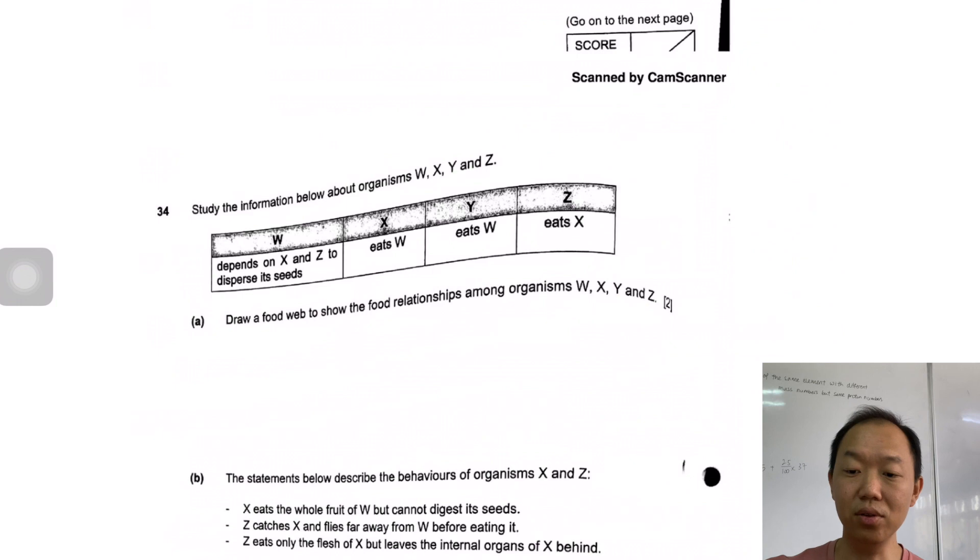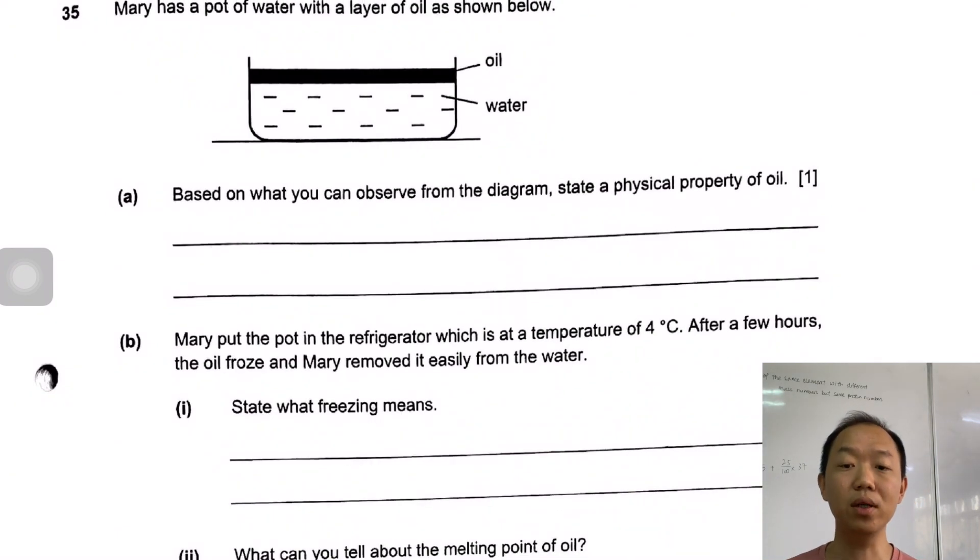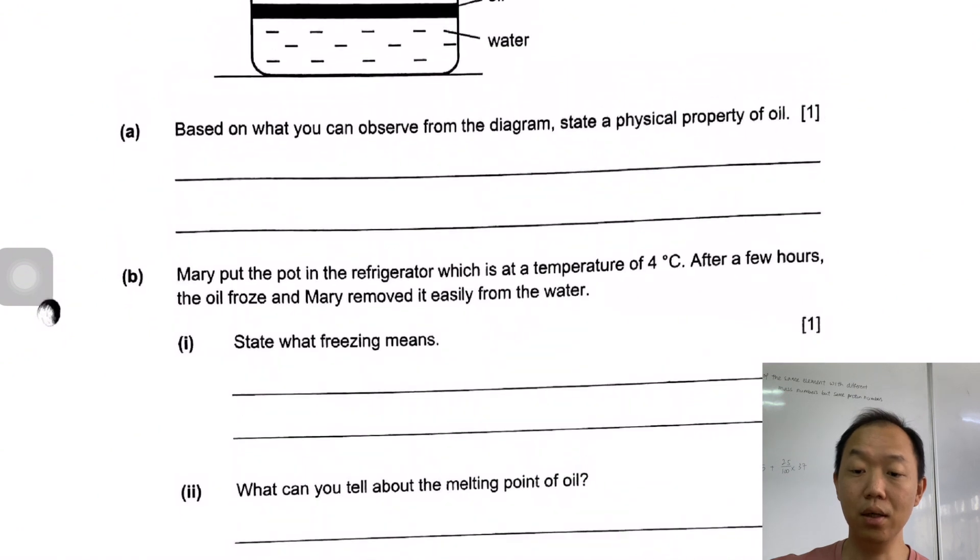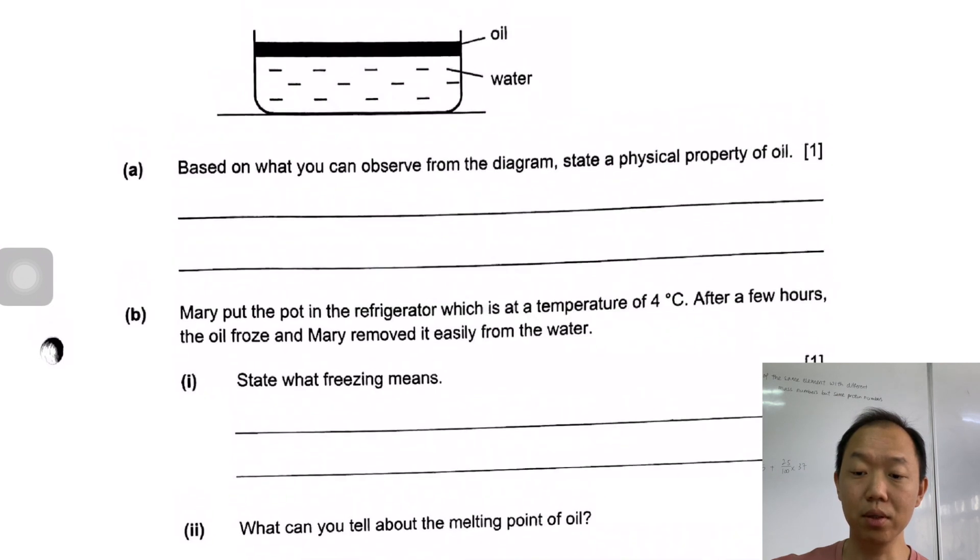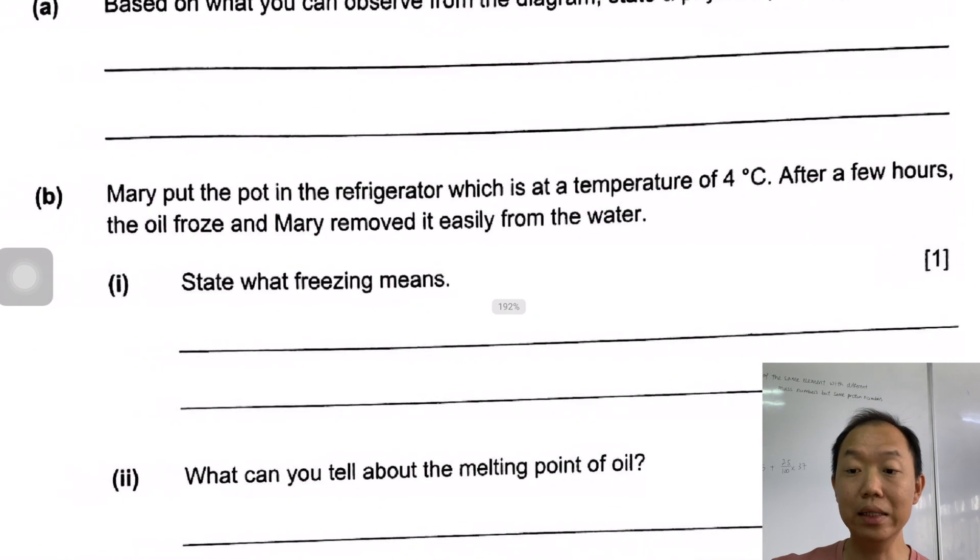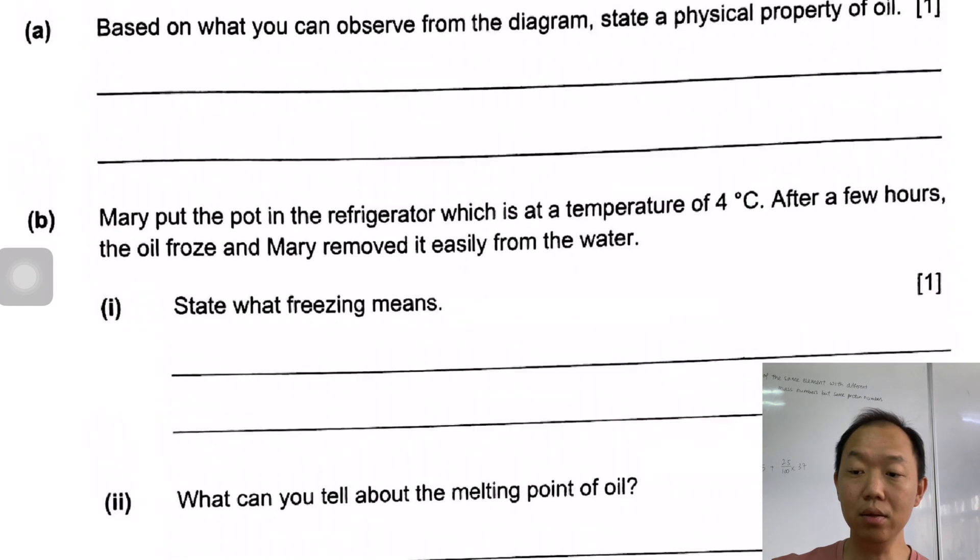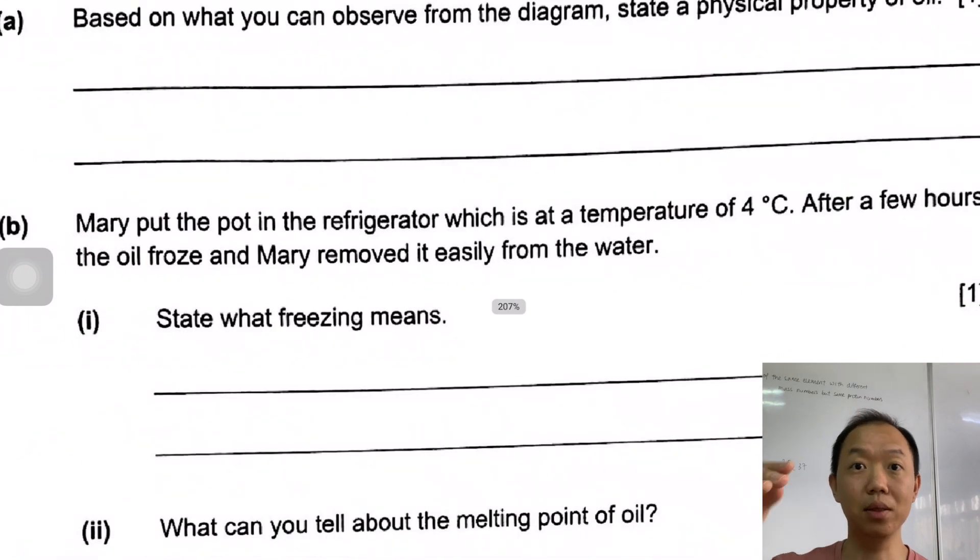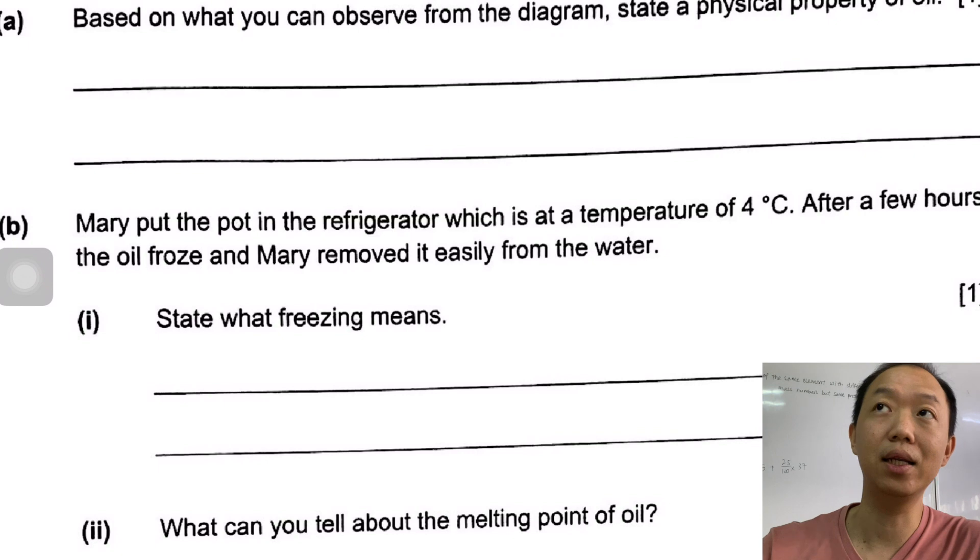Mary has a pot of water with a layer of oil as shown. State a physical property of oil. The physical property of oil - first thing that comes to my mind is density, because it's floating on top of water. Can you see it's floating? It's floating on top of water. What is freezing? Freezing is the changing from liquid to solid state. What can you tell about the melting point of oil? She put the spot in the refrigerator which is at a temperature of 4 degrees. After a few hours, the oil froze and she removed it easily from the water. The melting point of oil is lower than water. Because the melting point of water is 0 degrees Celsius, but oil freezes at around 4 degrees Celsius. Mary was able to pick it up to take it out of the water.